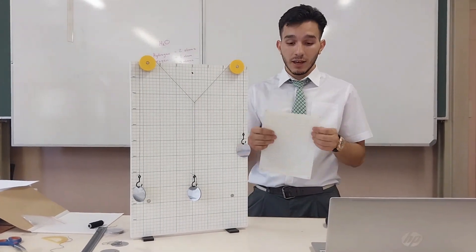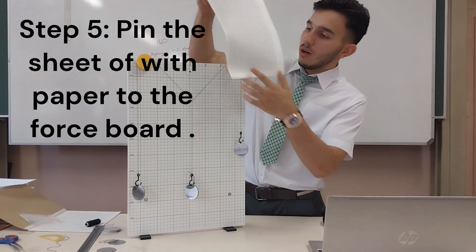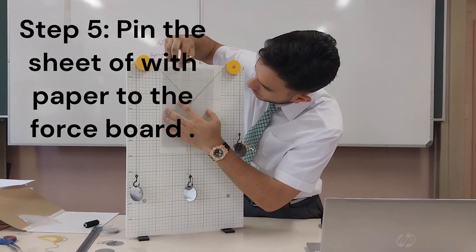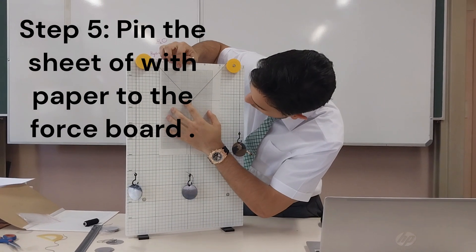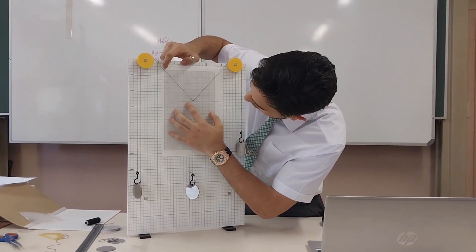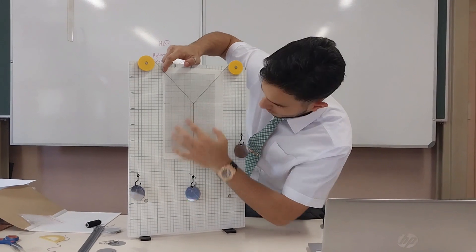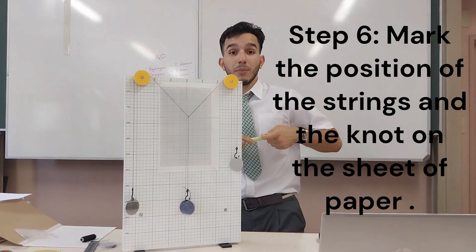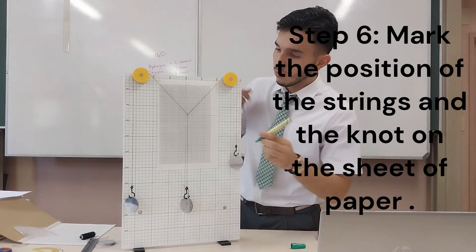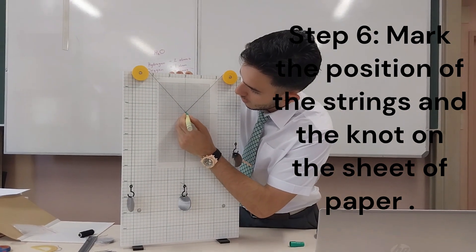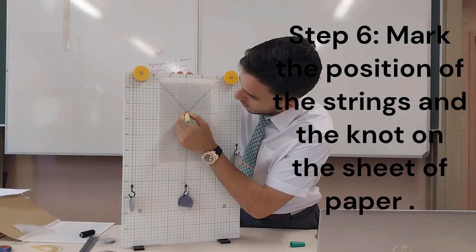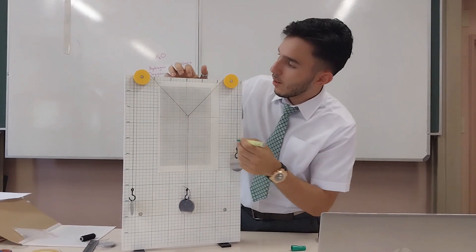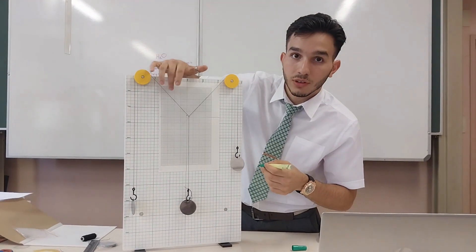Now we're going to paste the graph paper onto the board so that it matches with one of the lines. We're going to take a marker and mark point zero, and put a dot on each of the string marks.